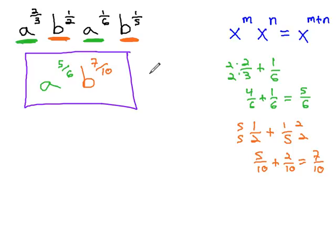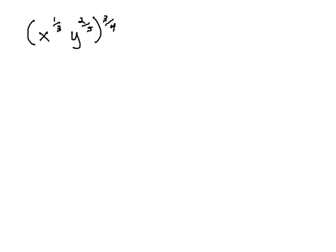Let's take a look at another example, which uses another property of exponents. This example, x to the one-third times y to the two-fifths, all to the three-fourths power, will use two common properties of exponents.